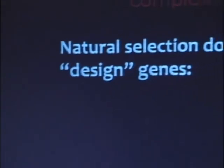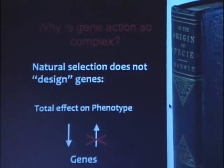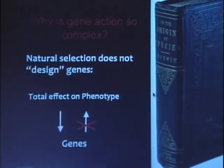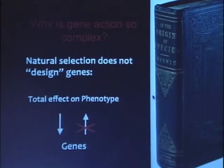So why is gene action so complex? Why isn't there simply a gene that causes a trait? I think we have to go back to natural selection to answer this question. Natural selection doesn't design genes from the ground up. Genes are the product of the total effect of genes on phenotypes, including all those messy interactions, through all of evolutionary history — and not the other way around.